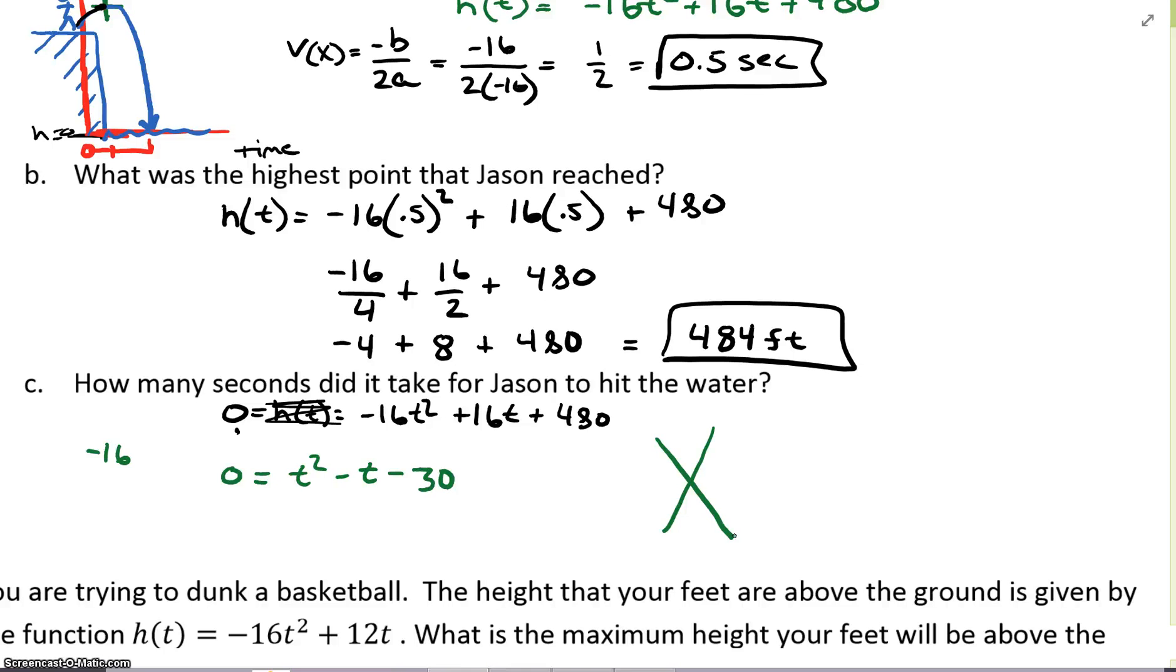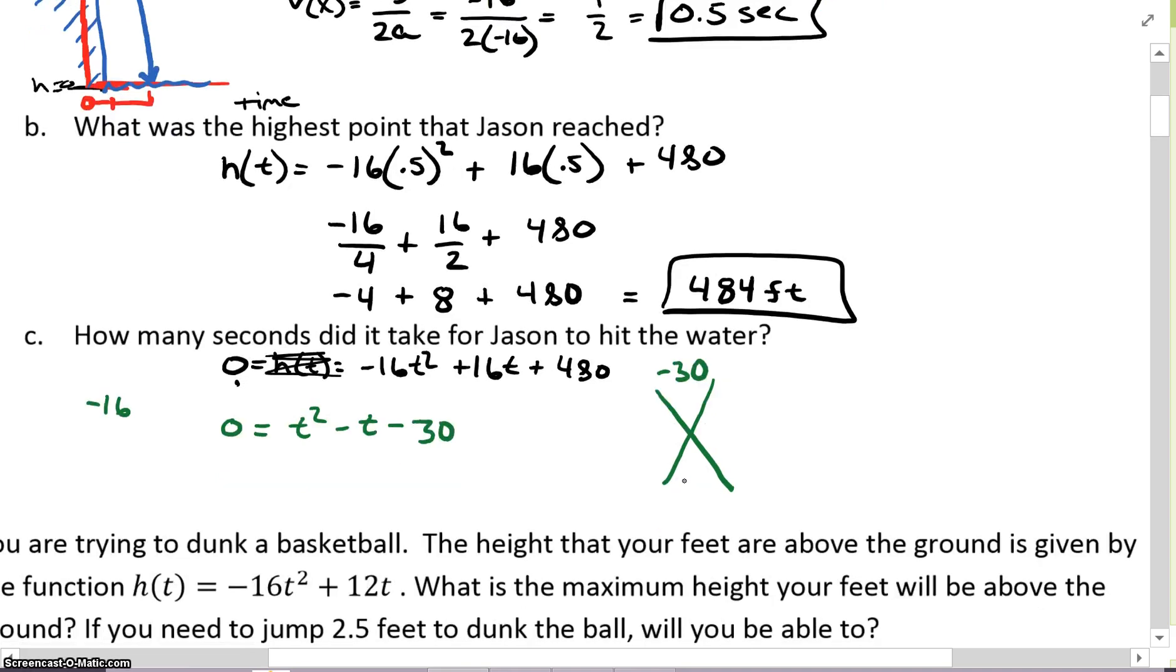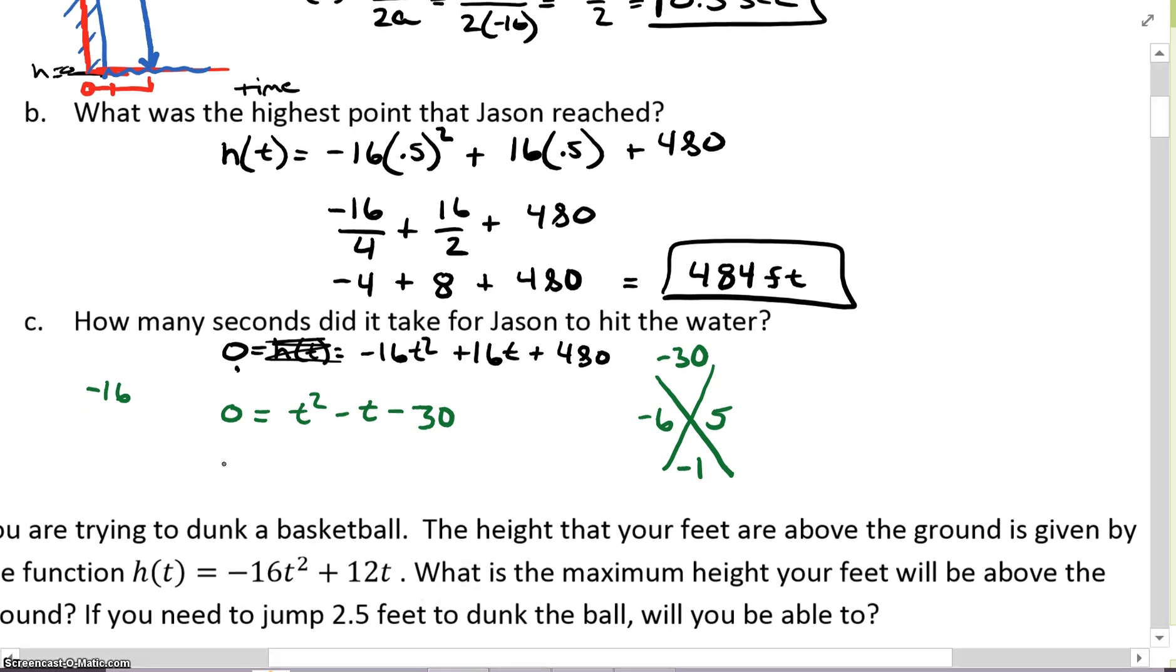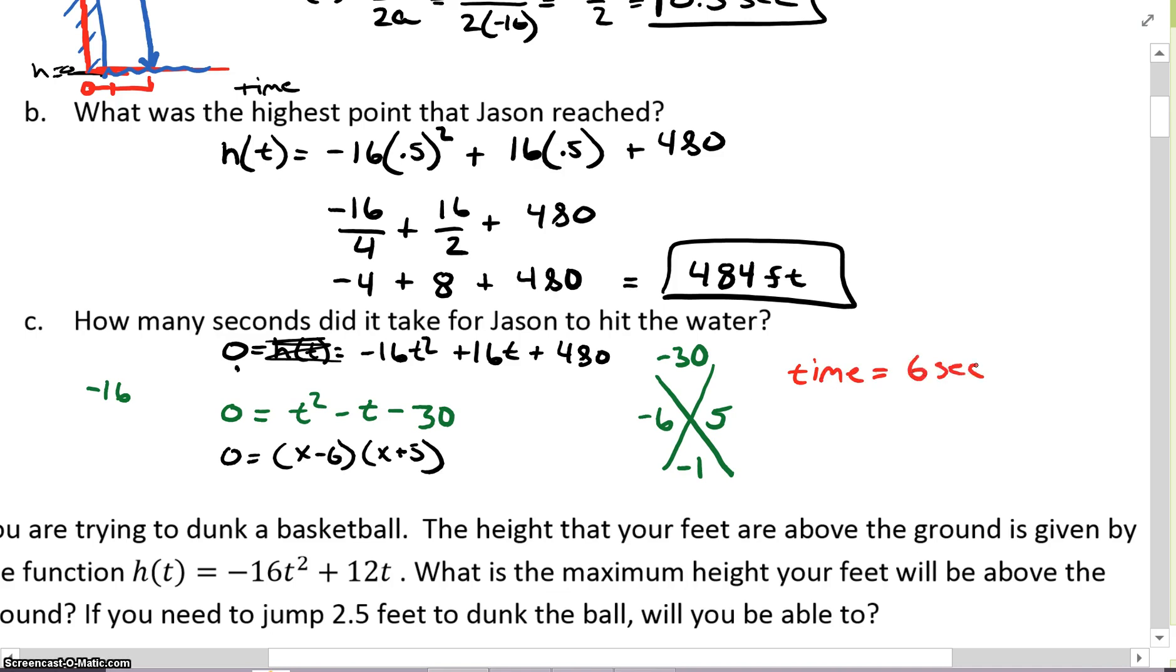I need a product of my a times c value, which would be 1 times -30. So I need two numbers that have a product of -30, and my b value is -1, so a sum of -1. That would be -6 and 5. So that tells me I'm going to have 0 equals (t - 6)(t + 5). Since my a value is 1, my time is just going to be the opposite of the factors. So it's going to be 6 seconds or -5 seconds. Can you have negative time? Absolutely not. So the time it took from when he jumped until he hit the water was 6 seconds.